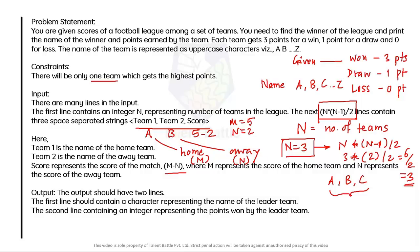So if the input is 'A B 5-2', A and B are the teams, A is the home team, B is the away team, 5 is the number of goals scored by A, and 2 is for B. The output should have two lines: the first line containing the character representing the name of the leader team.